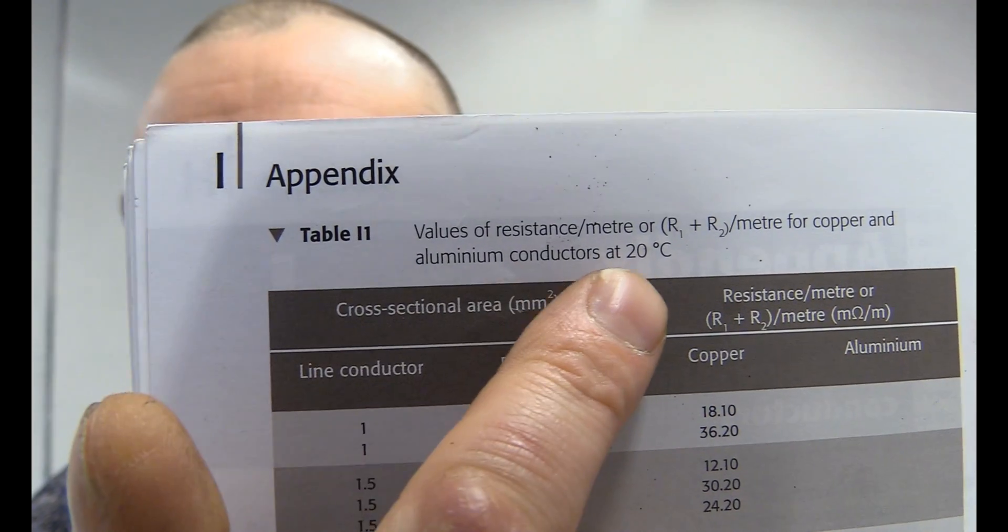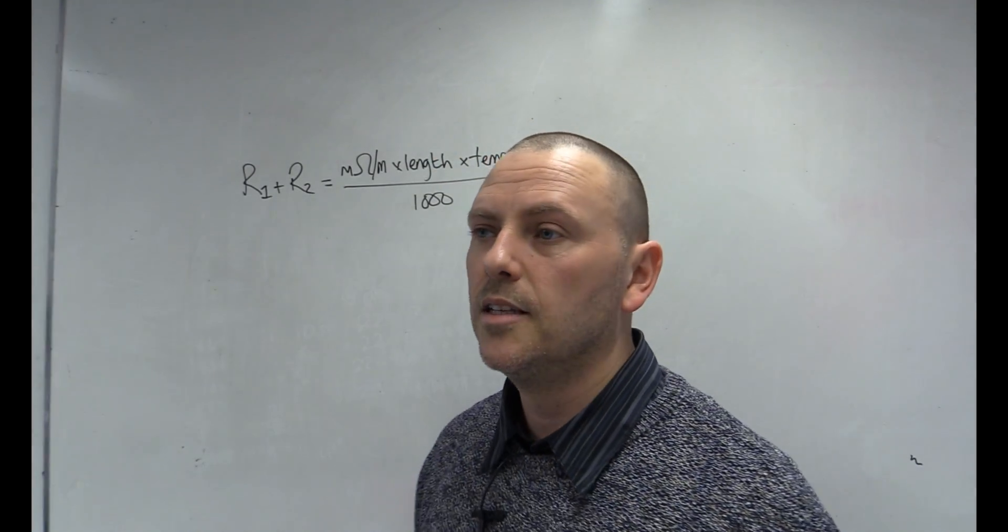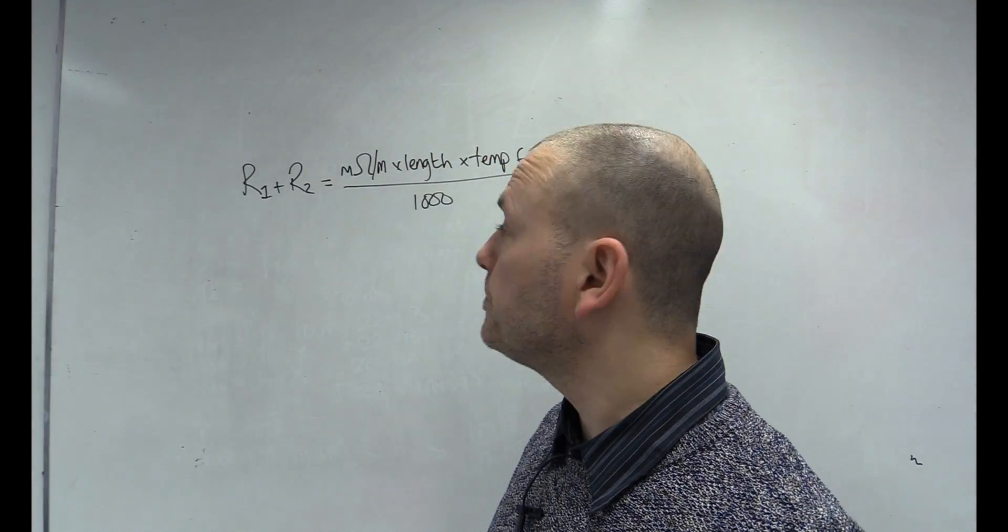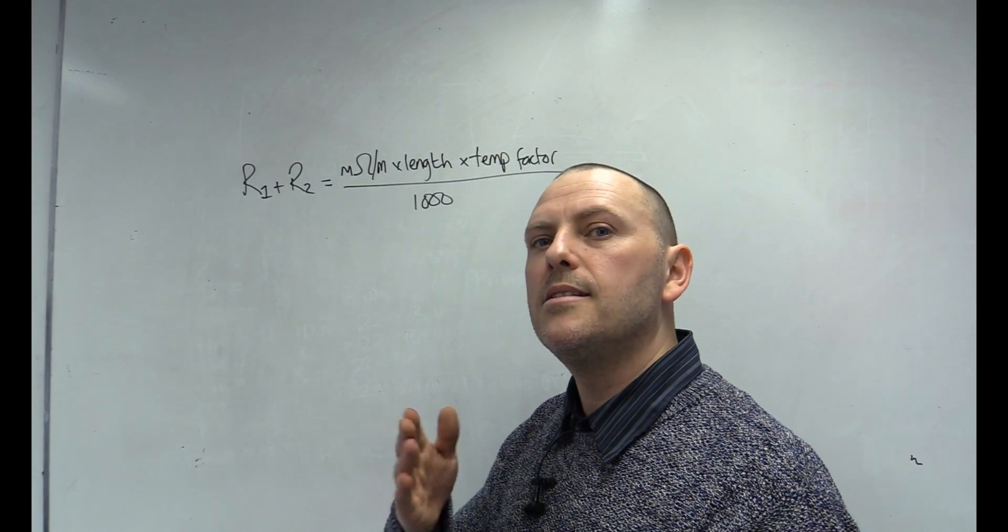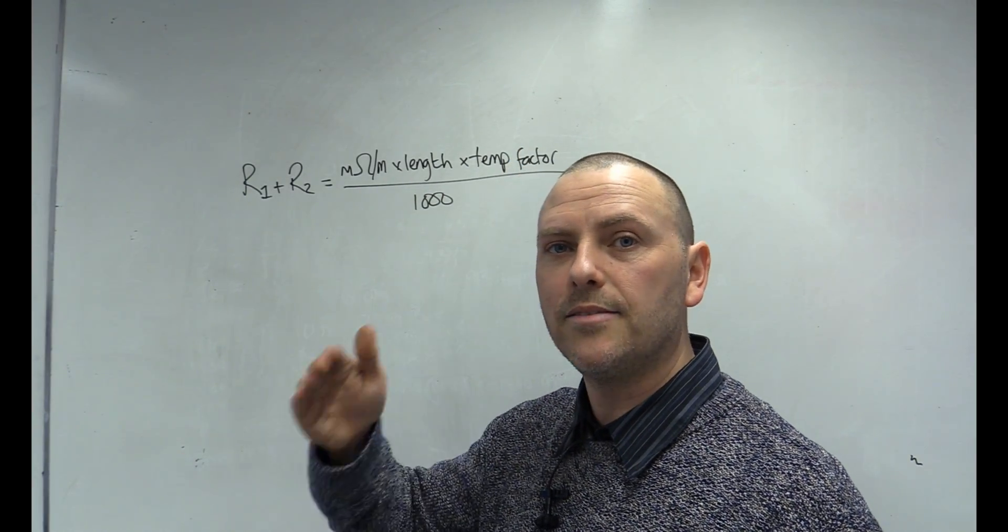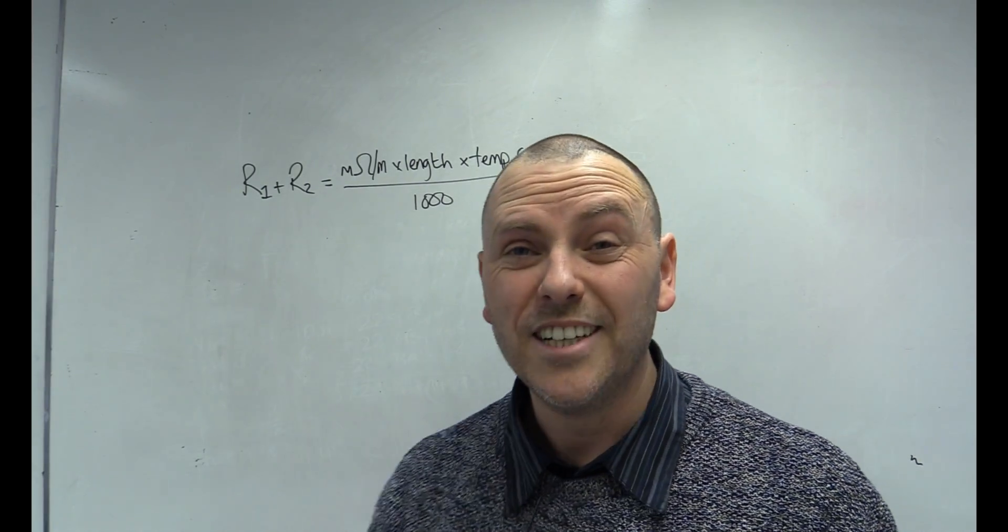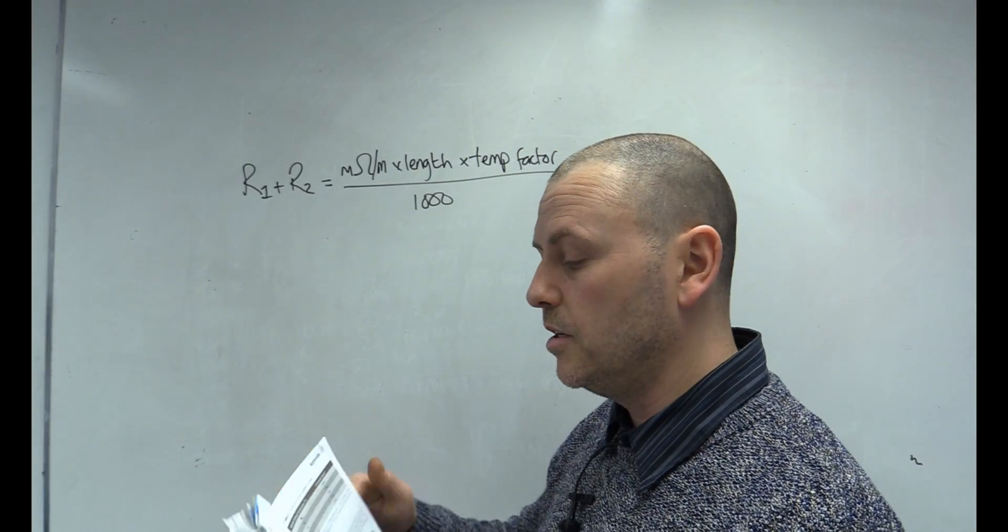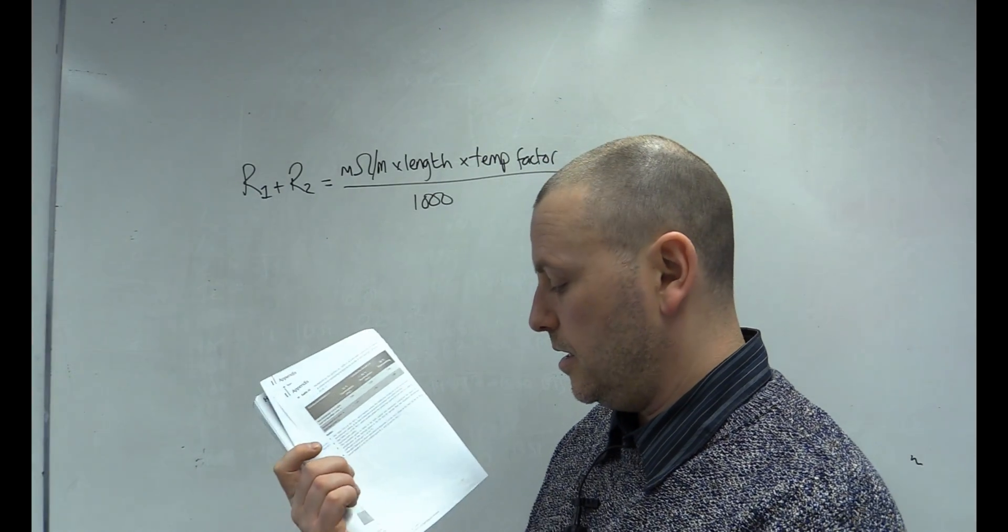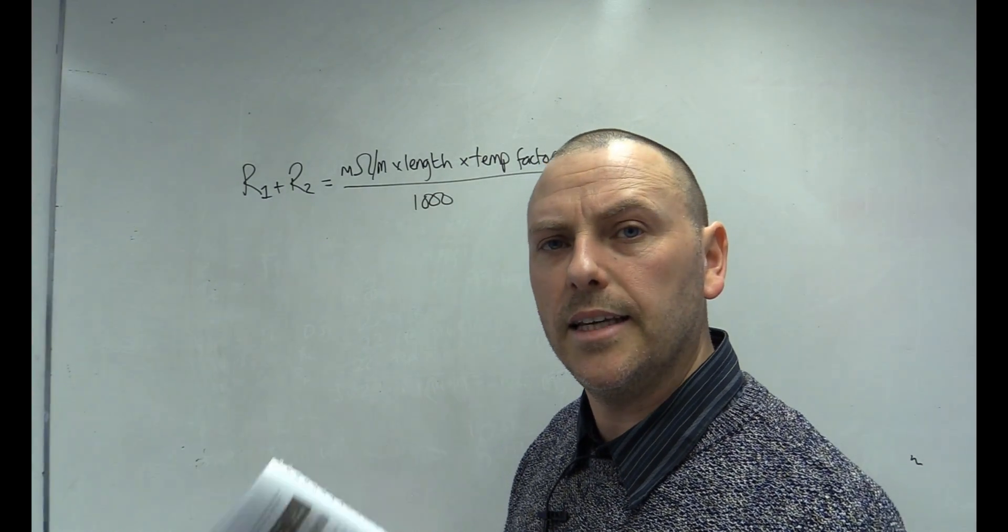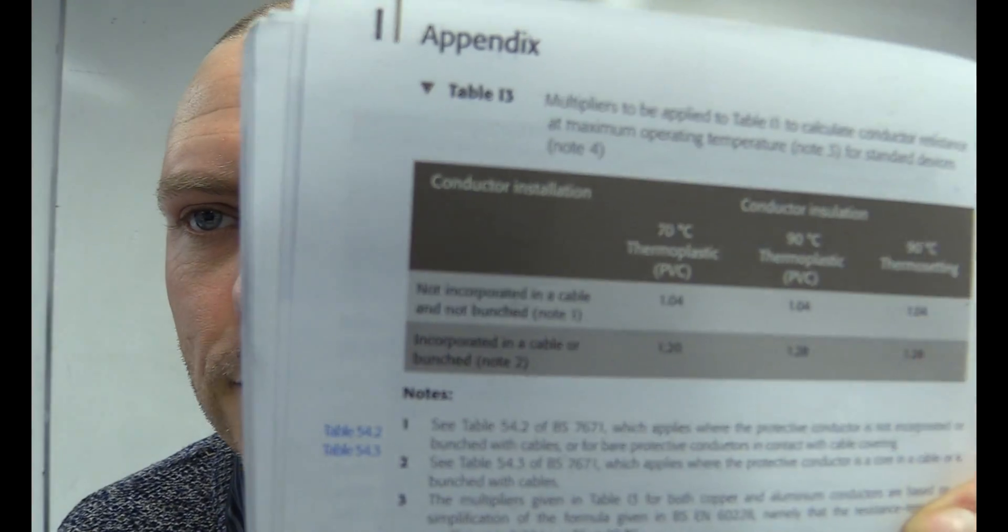Now, just notice that this is at 20 degrees, and so the maximum operating temperature of, say, a thermoplastic cable is 70 degrees, thermosetting cable 90 degrees, and so there's different factors to get to the limiting factor of those cables. They've made it really easy. They've given you another table. It's just one page away. Table I3, currently page 198 in the 18th edition on-site guide.